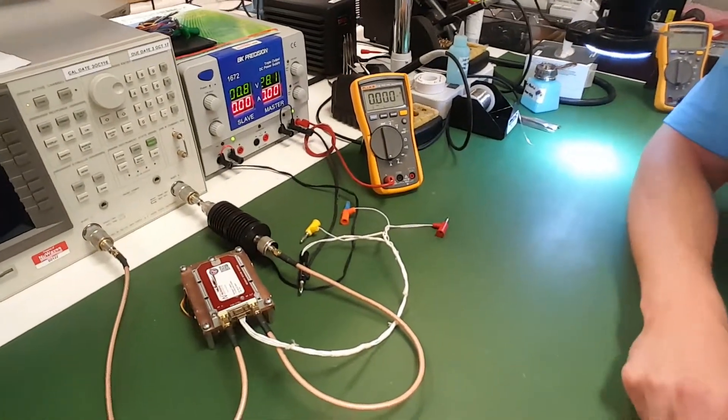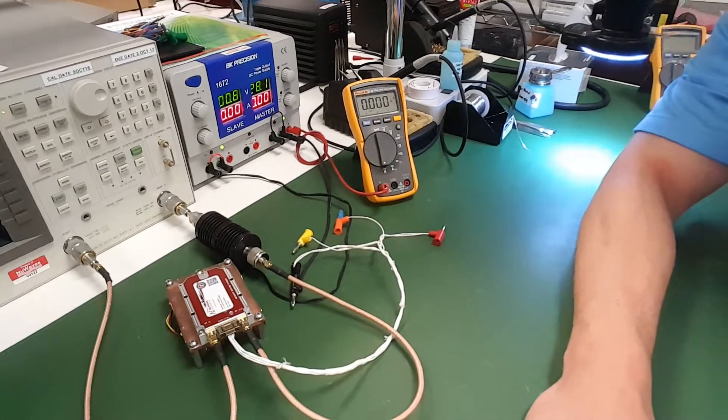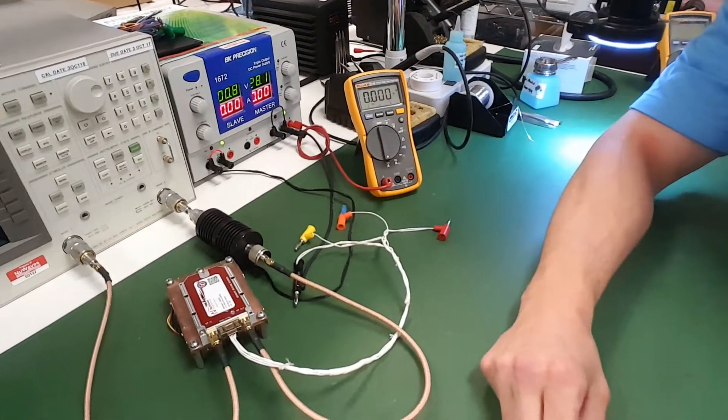So take a look here. I have it mounted to the heatsink. I have my input coming from the network analyzer driving it with zero dBm. I have the output going to the attenuator and into the network analyzer.